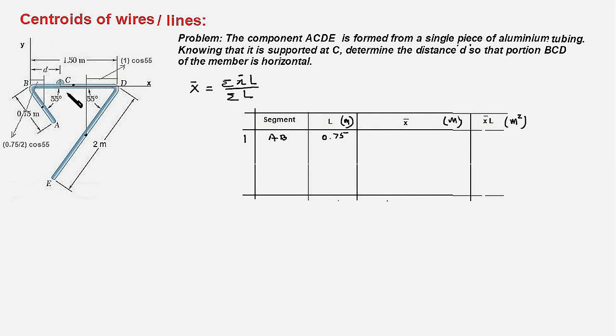This is the X axis and this is the Y axis, so the locations of centroids of different segments would be considered with respect to these two axes. So the X bar for AB would be equal to 0.75 upon 2 times cosine of 55 degrees, and this will be equal to 0.215. Therefore X bar L would be equal to 0.161.